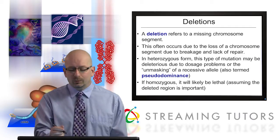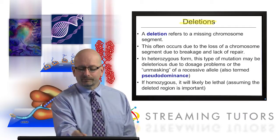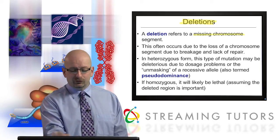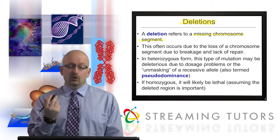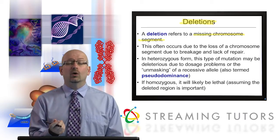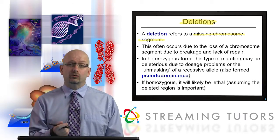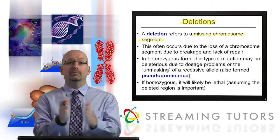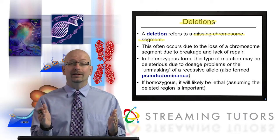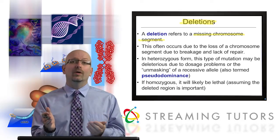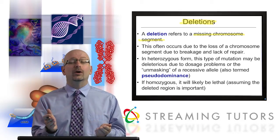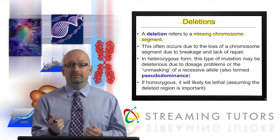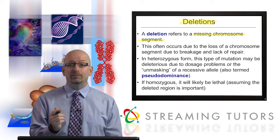So we'll start with deletions. The concept of a deletion is pretty straightforward — it refers to a missing chromosome segment. We even discussed deletions before when we were talking about fine structure mapping with Benzer. Now we're talking about potentially a much, much larger deletion. If you deleted one-third of chromosome one, you might be talking about 600 genes that are now gone. That's an extreme example, but it could be that large.